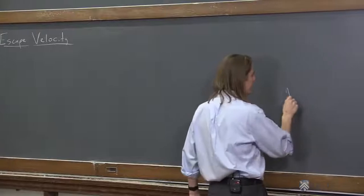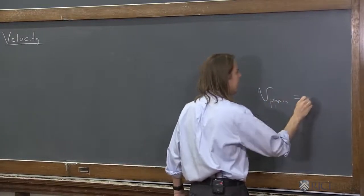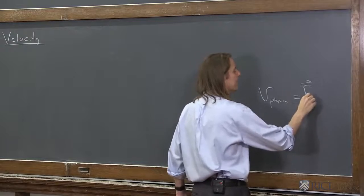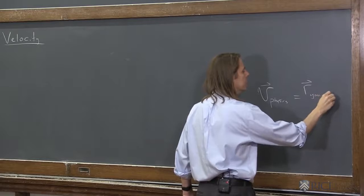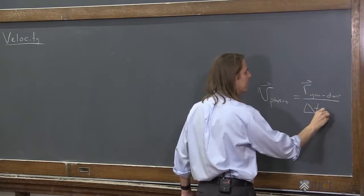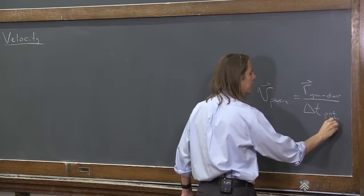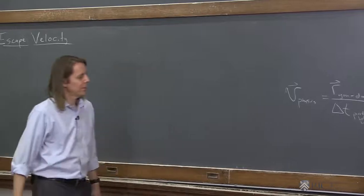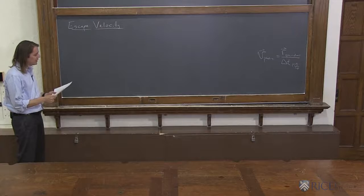This is for your physics class. The escape velocity for a physics class, it's basically the r vector from you to the door divided by the delta t of how often your professor looks up. So when I'm lecturing about escape velocity, I know most people are thinking about that one, but that's not the one we want.